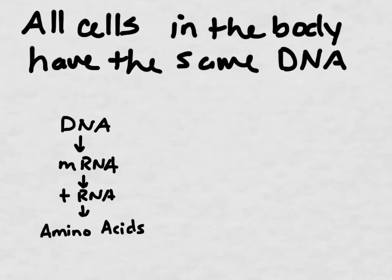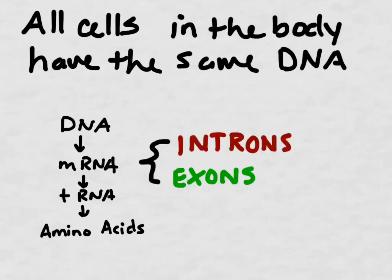DNA codes for mRNA, which codes for tRNA, which strings together amino acids. Remember also that within mRNA, there are sections that are important and sections that are not important, introns and exons.